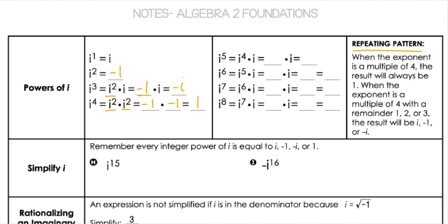If you look at this pattern, when the exponent is a multiple of 4, the result will always be 1. So when I look at 8, that's a multiple of 4, so the answer is going to be 1. I can break it apart into i to the fourth times i to the fourth, and that's going to be negative i squared, which is 1 again.